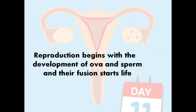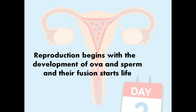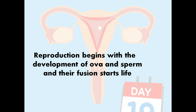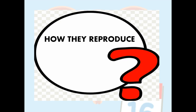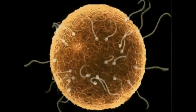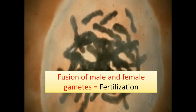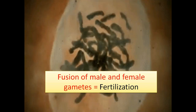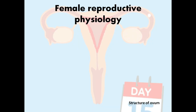We all know the very basic idea that reproduction begins with the development of ova and sperm. We are discussing this because the definite function of the reproductive system is reproduction. The whole story begins with the development of ova and sperm, which are the male and female gametes. When they fuse to each other, that fusion starts a new life, and that process is called fertilization.